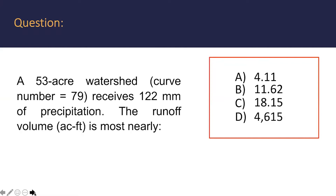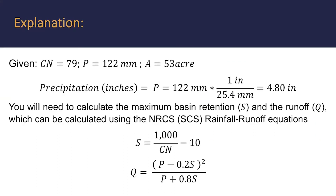Now, this is a relatively simple question. However, where they try to throw you off is the units. So just pay attention to the unit conversions as we go through this problem. We're given the curve number of 79 and the precipitation in millimeters, as well as the size of the watershed in acres.